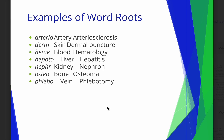Some more examples of root words. We have arterio, which basically means artery. You're going to learn more about arteries in this course — there is a huge difference between an artery and a vein. Arterio means something to do with the artery. An example is arteriosclerosis, which is basically a hardening of the arteries. Sclerosis means hardening.